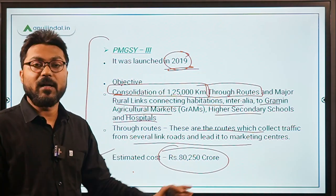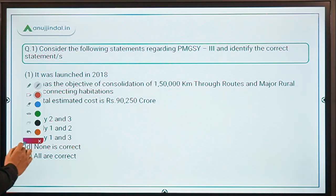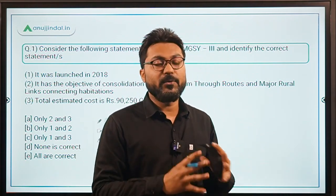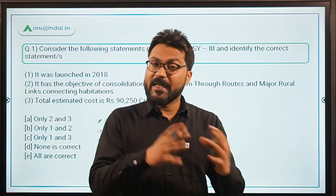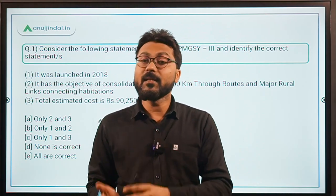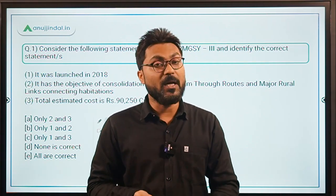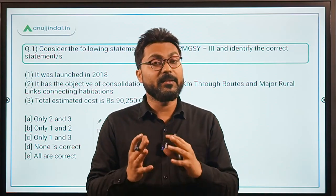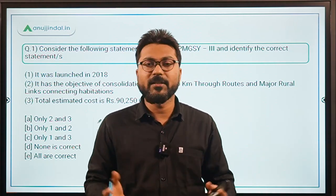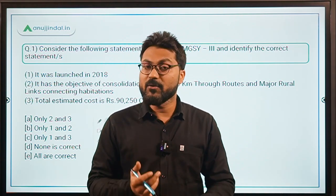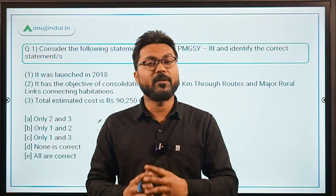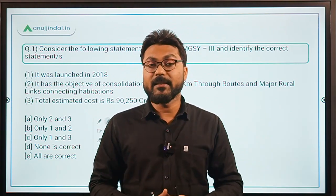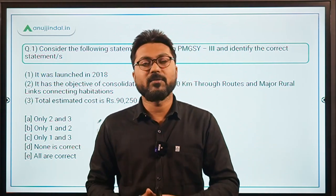To summarize: PMGSY's basic objective is to provide all-weather connectivity to unconnected rural habitations — population 500 or more in plain areas, 250 or more in northeastern, hilly, or tribal areas. Launched in 2000 by the Ministry of Rural Development. Funding pattern: 60:40, 90:10, and 100:0. PMGSY-2 launched in 2013 for upgradation of 50,000 km at Rs. 33,030 crores. PMGSY-3 launched in 2019 for consolidation of 1,25,000 km at Rs. 80,250 crores.